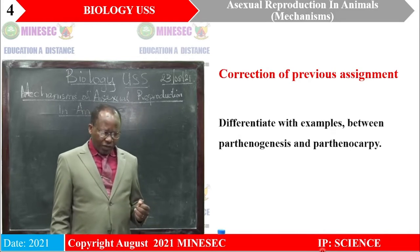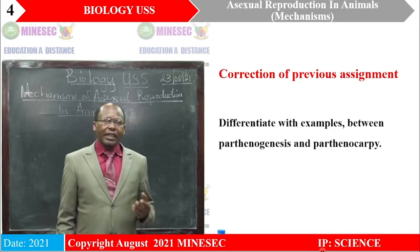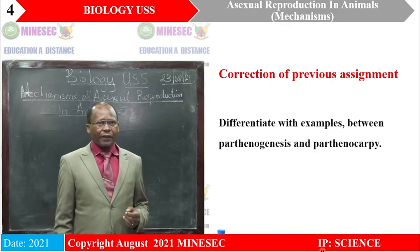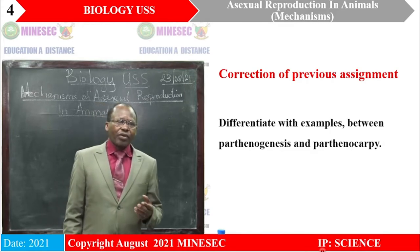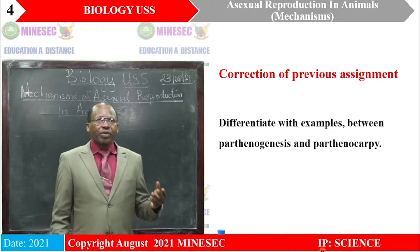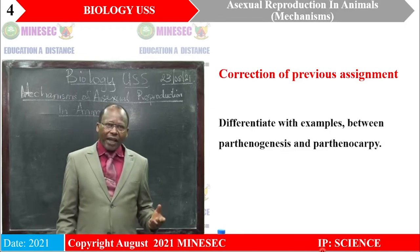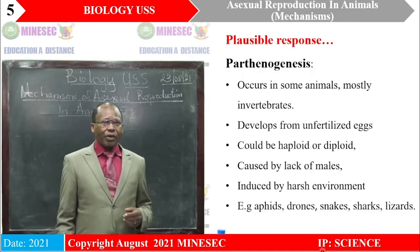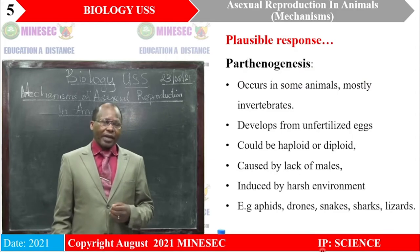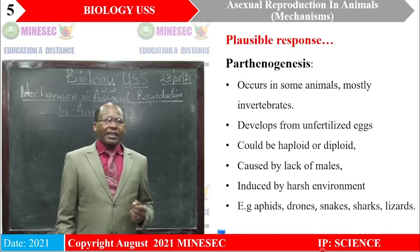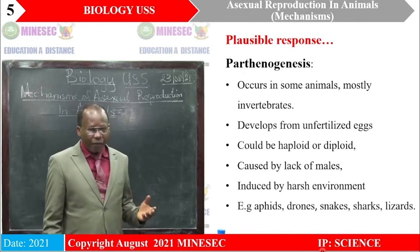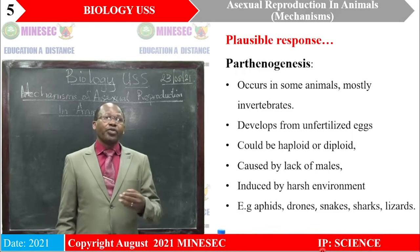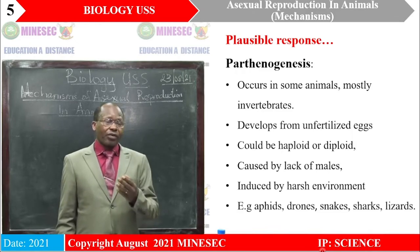Before we proceed, it is important that we look at the assignment we have and see if we did it correctly. The assignment was: we were asked to differentiate with examples between Parthenogenesis and Parthenocarpy. These are terms we have seen in the previous lesson. The plausible response could have been as follows — when I say plausible, it implies you could see it otherwise, but the key facts would be as follows.